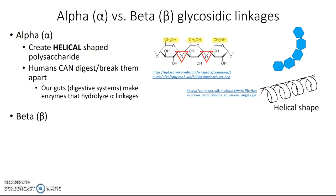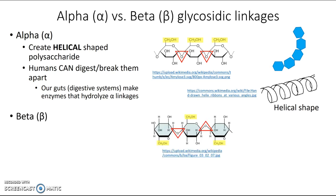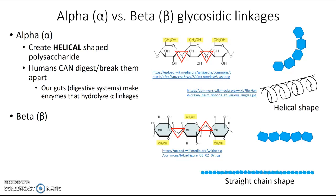What about beta linkages? Beta glycosidic linkages are recognized because the monomers alternate which direction they're facing, and so do those glycosidic linkages. When you put together many glucoses this way, there's an angle between the first two, but the next bond faces the opposite direction and cancels out that bond angle. So if we put many of them together, there is no cumulative bond angle and the molecule doesn't bend — we get a straight chain shape. Polysaccharides with beta glycosidic linkages end up with a straight chain shape.